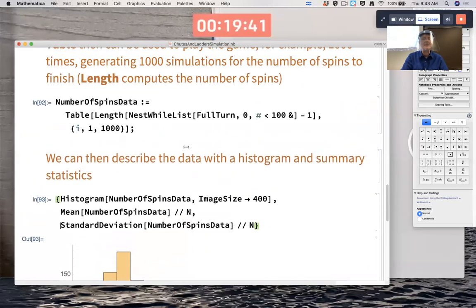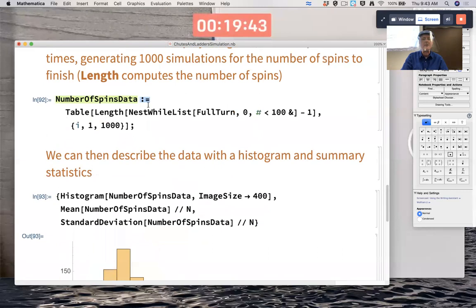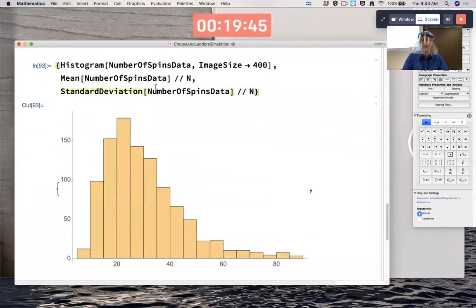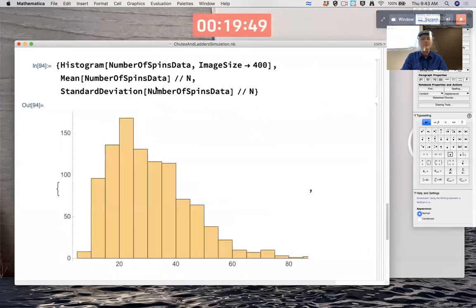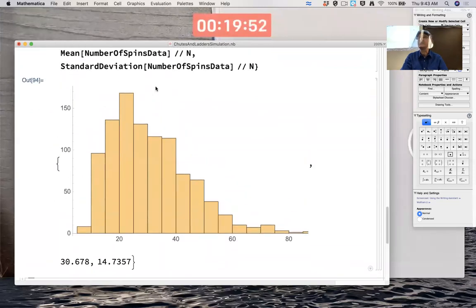I think if I re-enter this even as is because I did a colon equals here instead of an equals, I think it'll redo the simulation and give me a different graph. With a different mean and different standard deviation. But not too different. Okay.